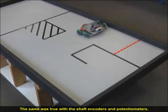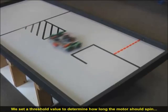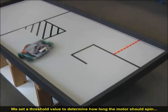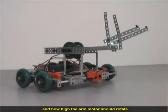The same was true with the shaft encoders and potentiometer. We set a threshold value to determine how long the driving motor should spin and how high the arm motor should rotate.